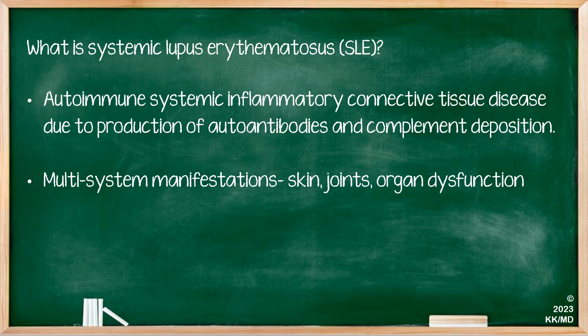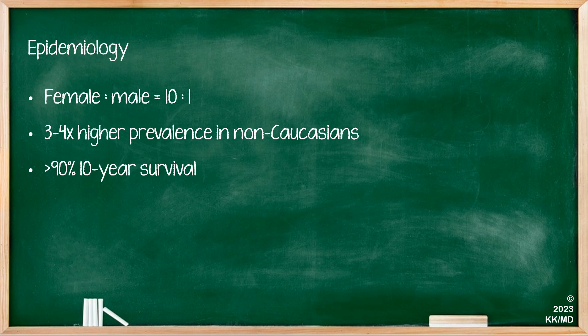So, what is systemic lupus erythematosus? It's an autoimmune systemic inflammatory connective tissue disease due to production of autoantibodies and complement deposition. It is a multi-systemic disease with multi-systemic manifestations, including skin, joints, and other organs. In terms of epidemiology, it affects females far more commonly than males with a ratio of about 10 to 1, and is approximately three to four times more common in non-Caucasians compared to Caucasians. It has a relatively good survival with more than 90% at 10 years.